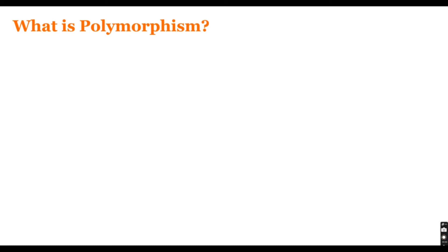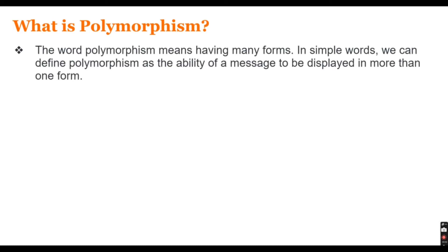Now let's understand what polymorphism is. The word polymorphism means having many forms — basically the ability to take many forms. In simple words, we can define polymorphism as the ability of a message to be displayed in more than one form. If you want to display any property or message in multiple forms, you can make use of polymorphism.